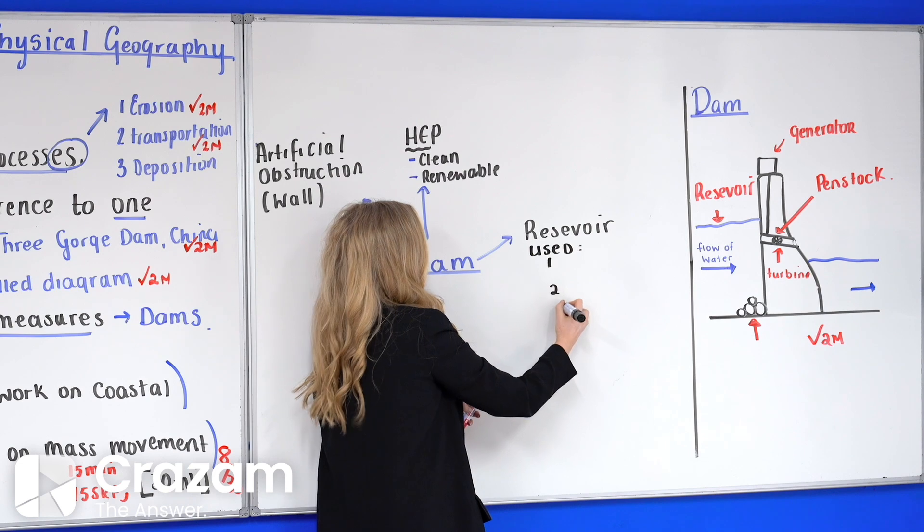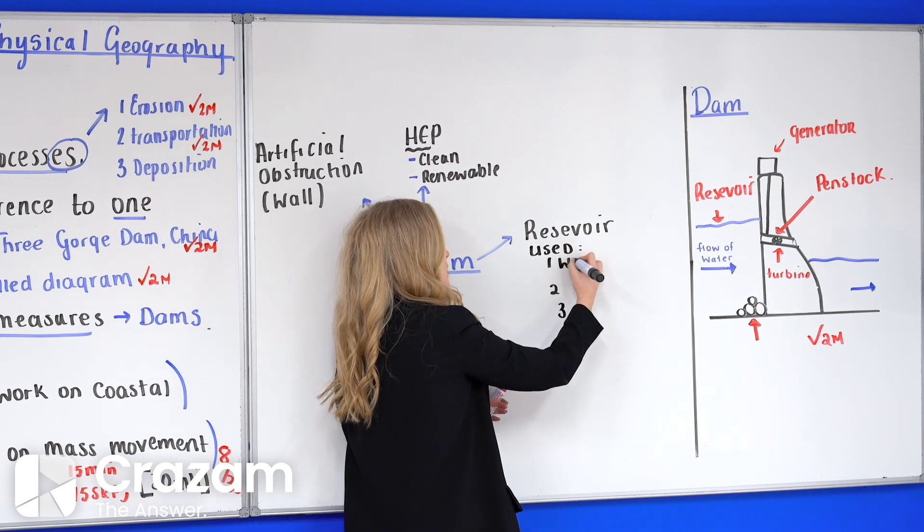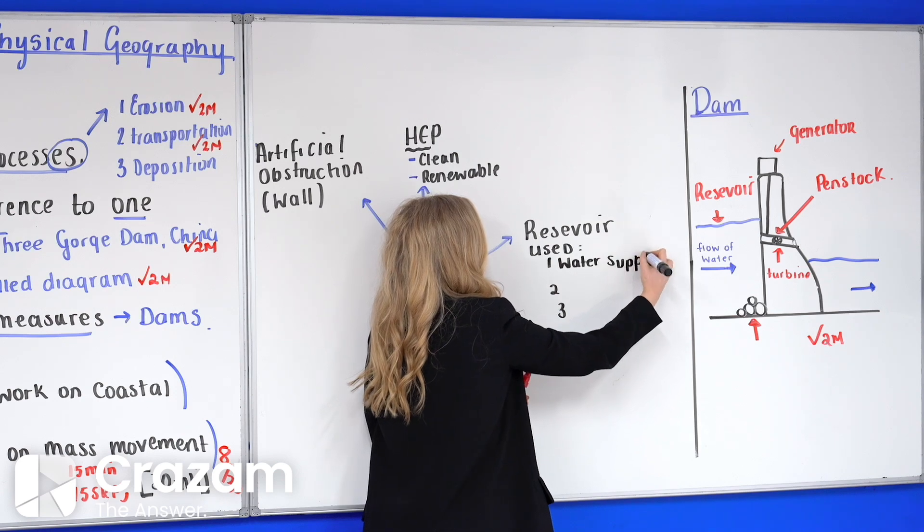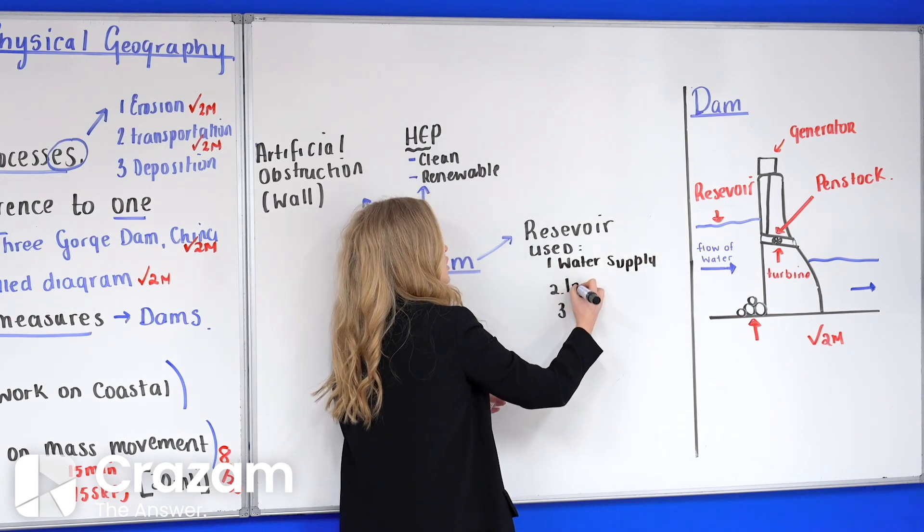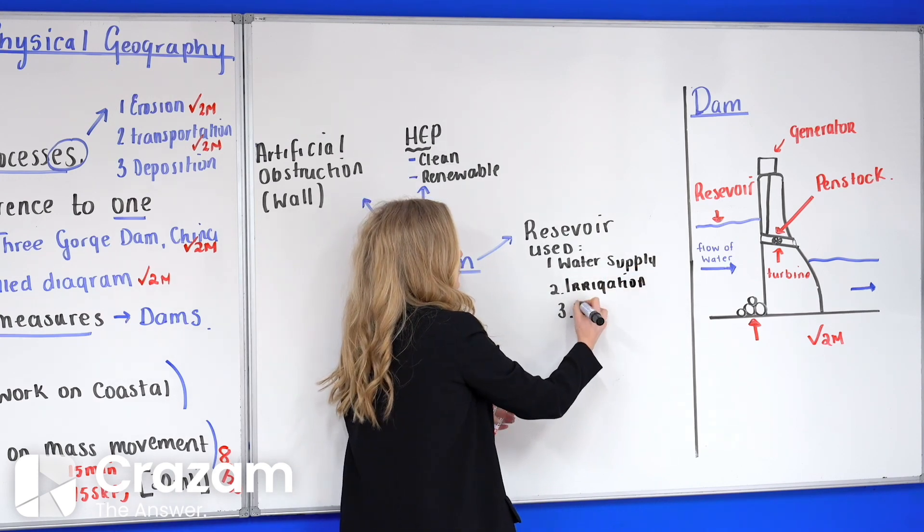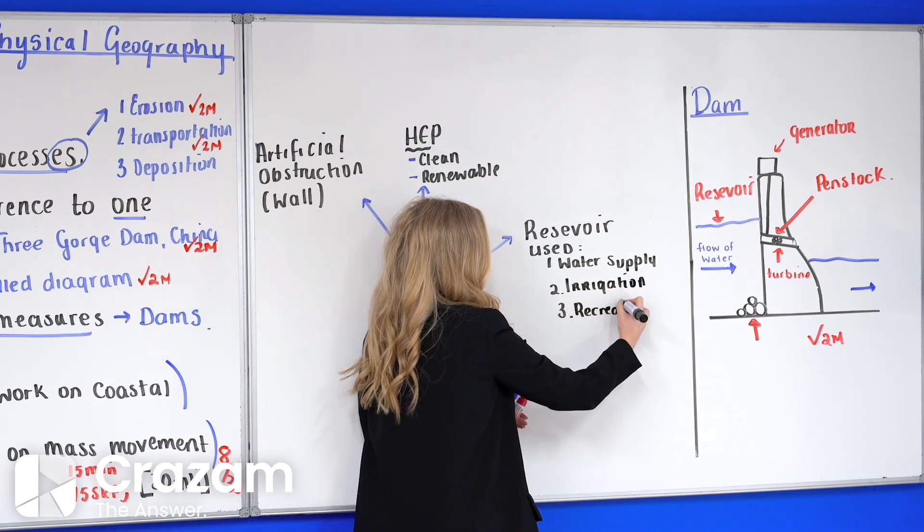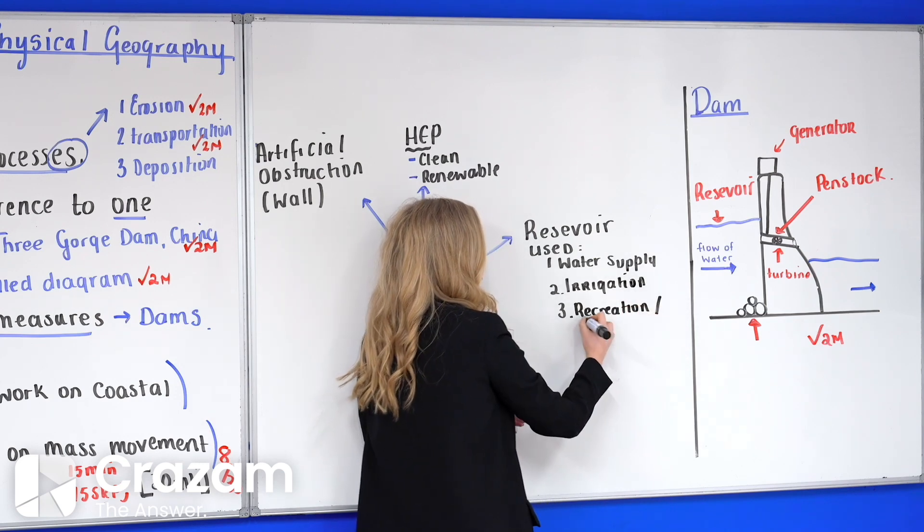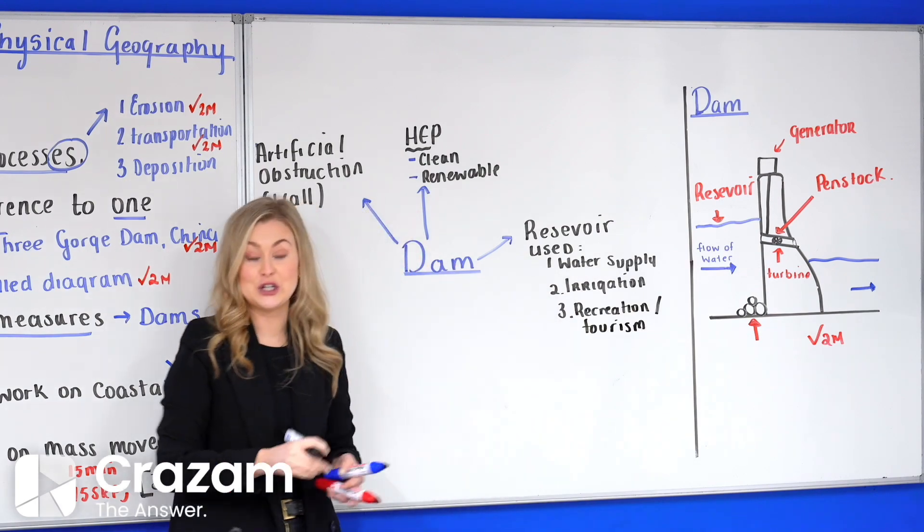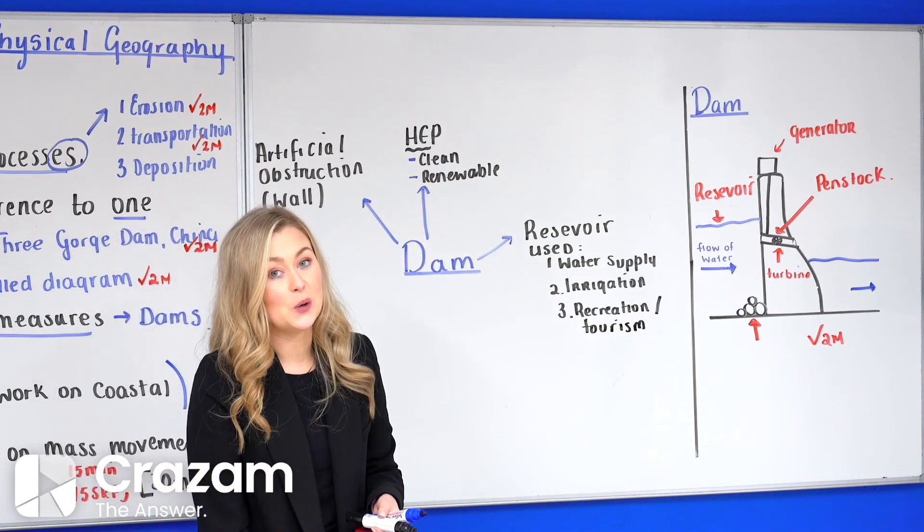A reservoir, what is its uses or what is it used for? We mentioned three things here. Number one: water supply. Number two: irrigation. And number three: recreation or tourism. And we get the examples of the latter two.